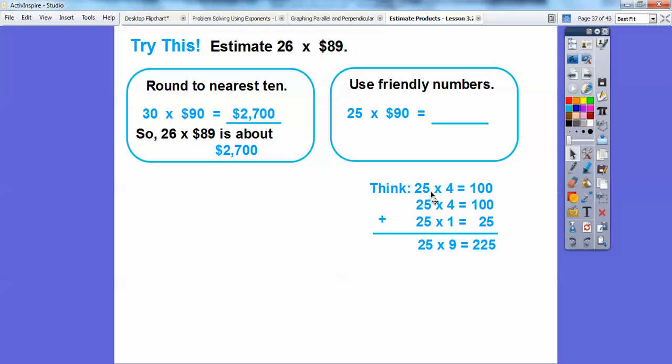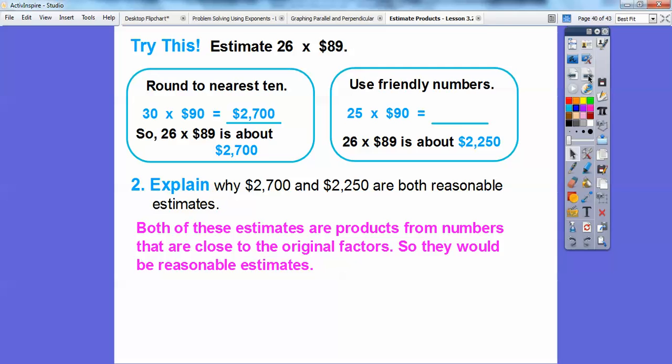Remember, here's like four quarters. 25 times 4 is a dollar. Another 25 times 4 is a dollar. And then 25 times 1 is 25 cents. And then here's my 9 right here. If I added those up, so 25 times 9 is 100 plus 100 plus 25 is 225. So then 25 times 90 is 225 with a zero. So another estimate is 26 times 89 is about 2,250.